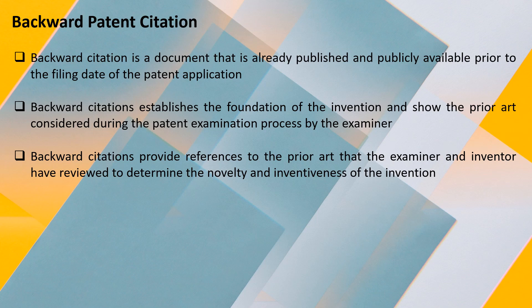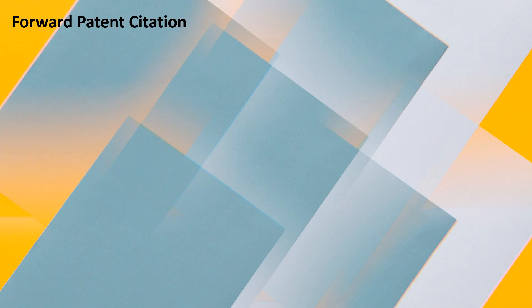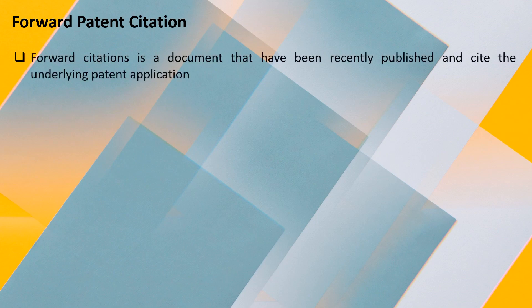Backward citations provide references to the prior art that the examiner and inventor have reviewed to determine the novelty and inventiveness of the invention. Based on what was existing — considered as the backward citations — it is determined if the application filed is worthy of a patent grant. The application is novel and inventive with respect to the prior art, and these prior art documents are mentioned as backward citations in a patent document.